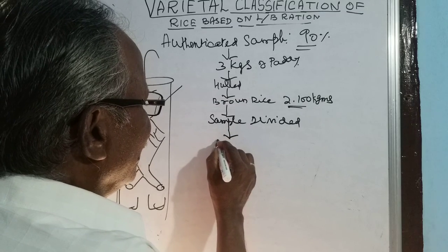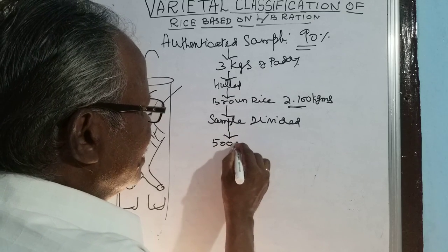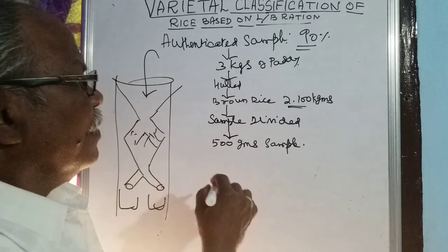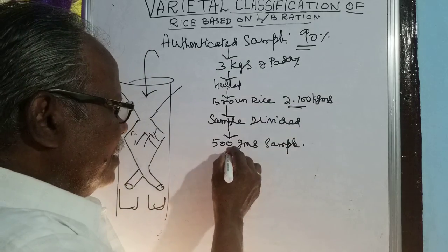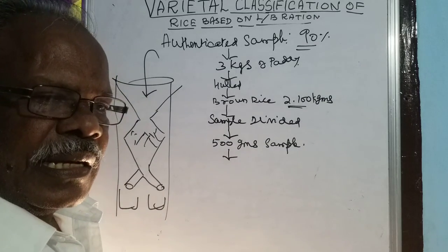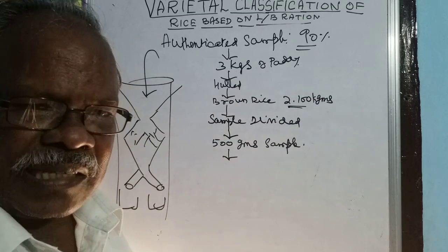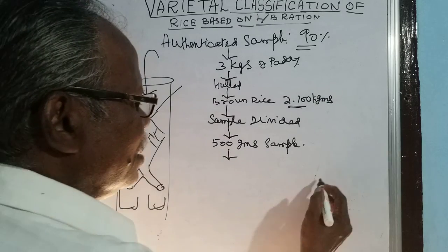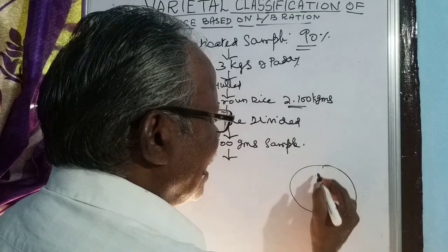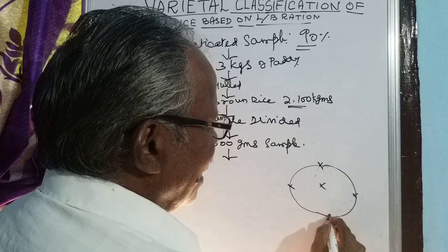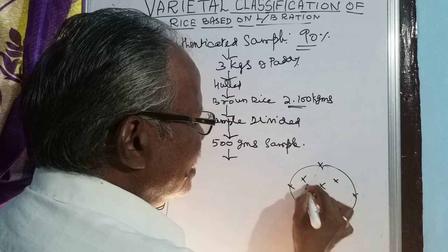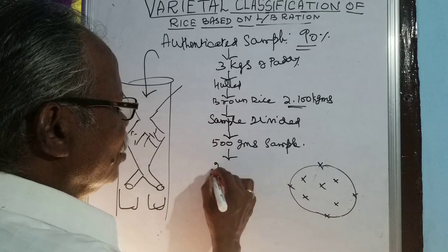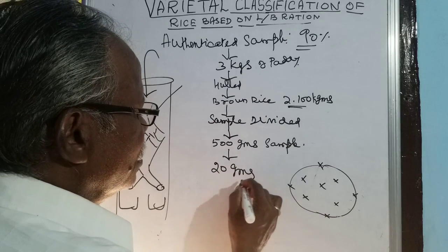We obtain a 500-gram sample. From this 500-gram sample, we spread it in a circular fashion and take a 9-place sampling from that. From the spread rice, 9-place sampling is taken, which is equivalent to 20 grams.